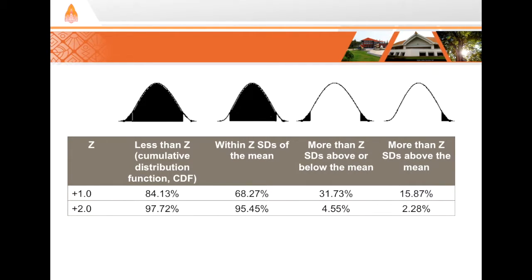We can also find these values using functions in Excel or any stats program like Stata. So in my case, I found that the z was 2.0, so I look at this table and I say that 97.72% of observations can be expected to be less than that observation, less than 3.